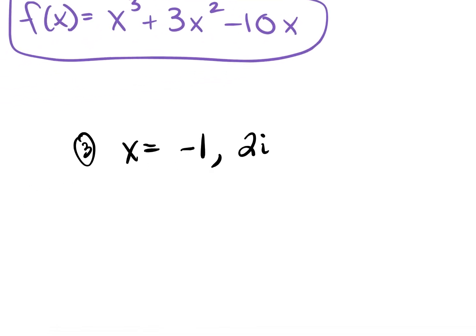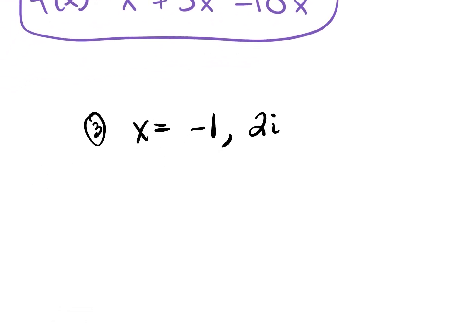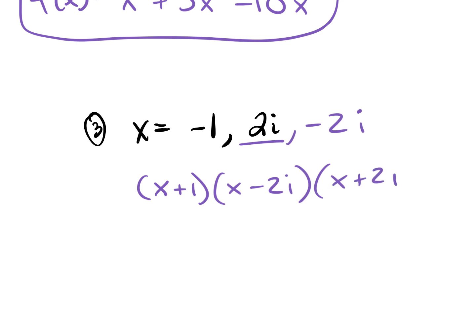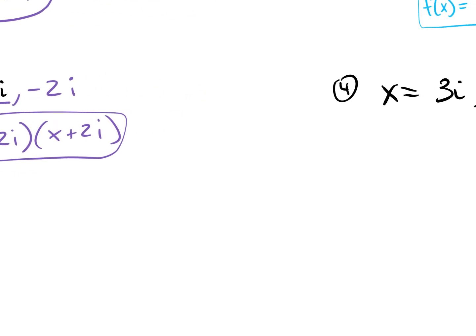Let's look at number 3. Are we missing any zeros? We have positive 2i, so we need negative 2i. I'll write it out in factored form and let you multiply it on your own. The factors would be x plus 1, x minus 2i, and x plus 2i. You'd want to FOIL out the conjugates first or use your conjugate shortcut. Let's look at number 4.